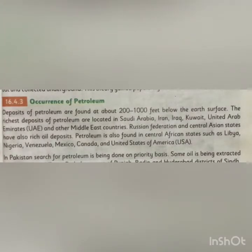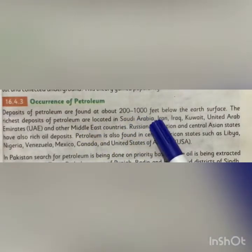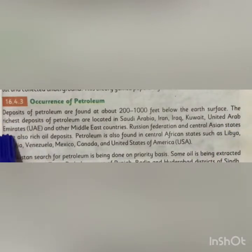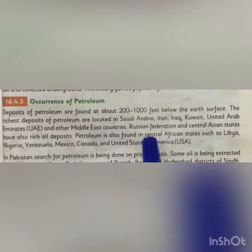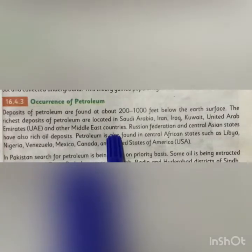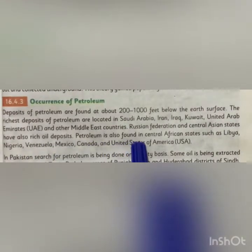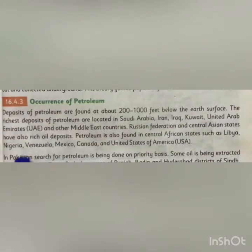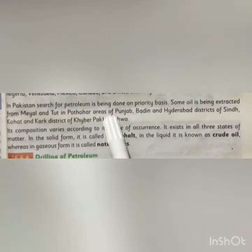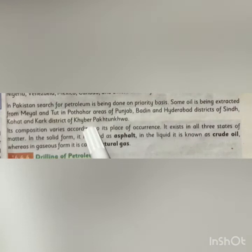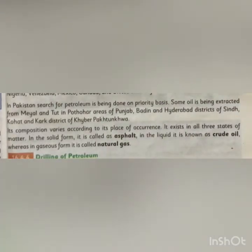Next is the occurrence of petroleum. Deposits of petroleum are found at about 200 to 1,000 feet below the earth's surface. The richest deposits are located in Saudi Arabia, Iran, Iraq, Kuwait, UAE and other Middle East countries. Russian Federation, Central Asian states, Libya, Nigeria, Venezuela, Mexico, Canada, and USA also have rich oil deposits. In Pakistan, search for petroleum is being done on a priority basis, with oil extracted from Mial and Toot in Potohar areas of Punjab, Badin and Hyderabad in Sindh, and Kohat and Karak districts of Khyber Pakhtunkhwa.